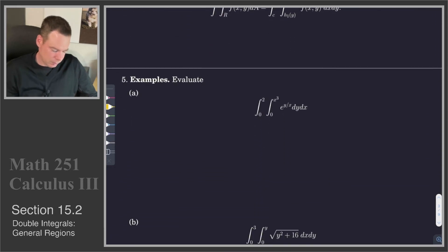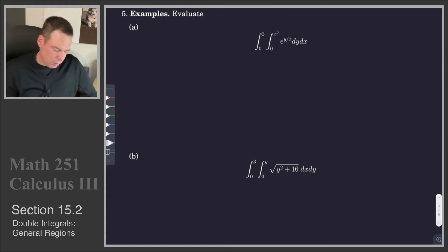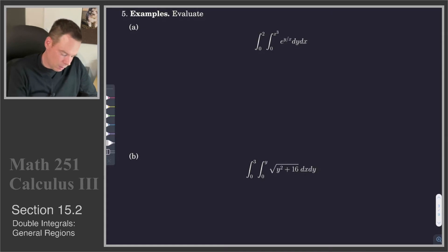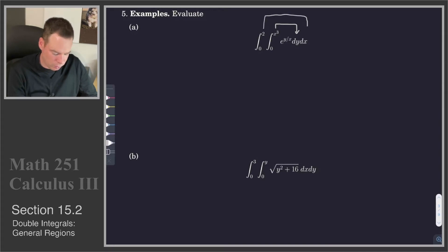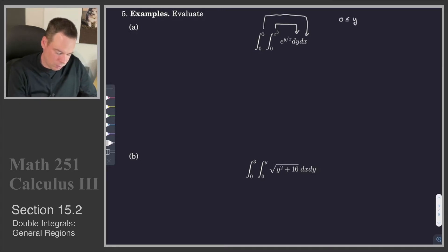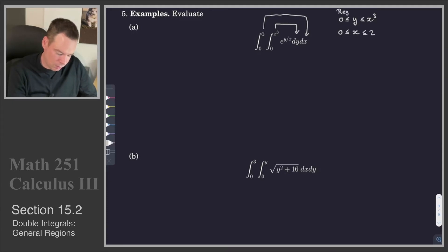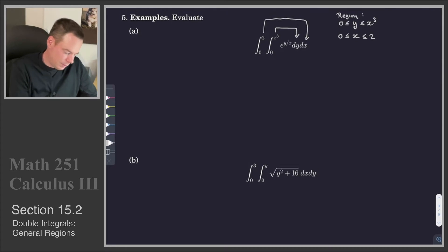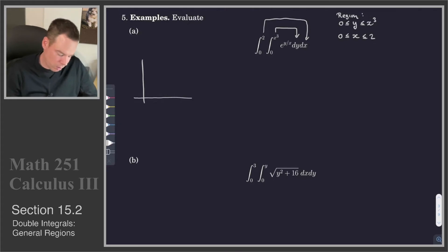Let's evaluate the integral of e to the y over x, as y ranges from 0 to x cubed and x ranges from 0 to 2. The inner integrals are with respect to y, so those limits are y values and the outer one is x. That means the region is: y ranges from 0 to x cubed, while x ranges from 0 to 2. It's always a good idea to sketch the region.